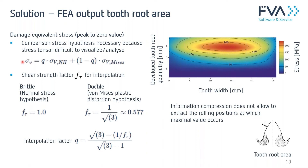Using this computed damage equivalent stress and looking at the resulting diagram, we see the tooth root geometry unrolled: tooth width on one axis, the developed tooth root geometry on the other. Zero means the ground of the tooth root, and going left or right shows the corresponding stress. Note that some information is lost — this data compression does not tell you at which rolling position exactly a certain minimum or maximum occurs.